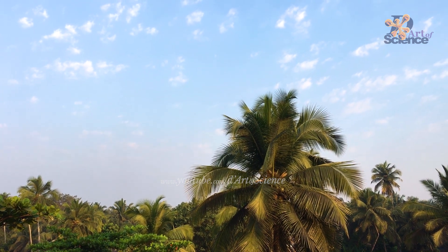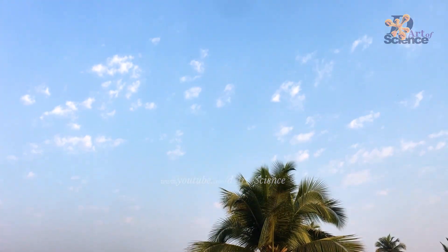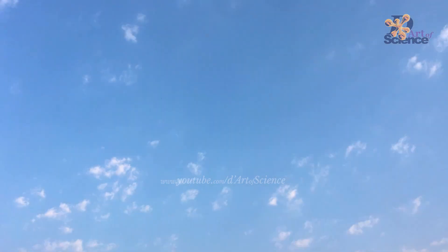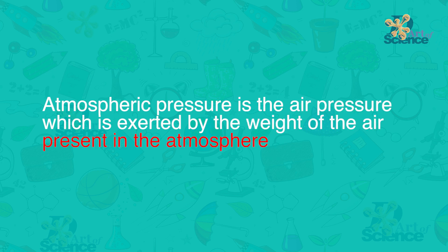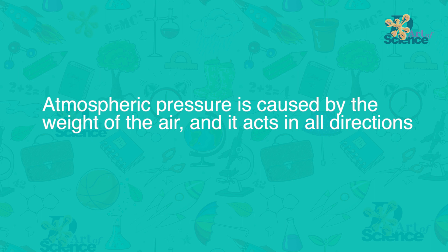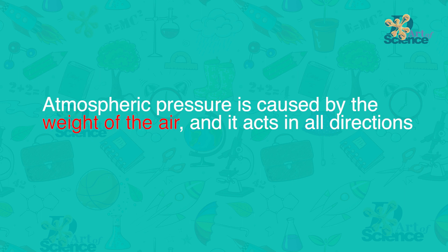As we have learnt, air exerts pressure in all directions including upwards. This pressure is known as atmospheric pressure and it acts on the surface of the earth and on all the objects on it including humans and animals. Atmospheric pressure is the air pressure exerted by the weight of the air present in the atmosphere, and it acts in all directions.